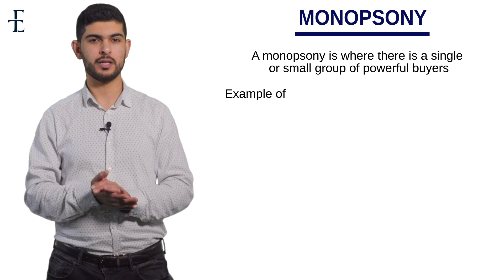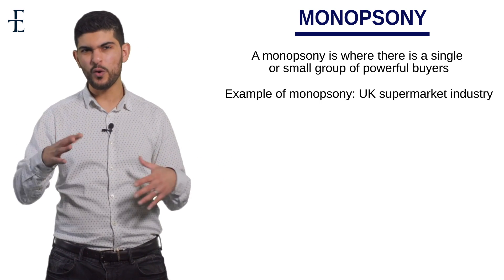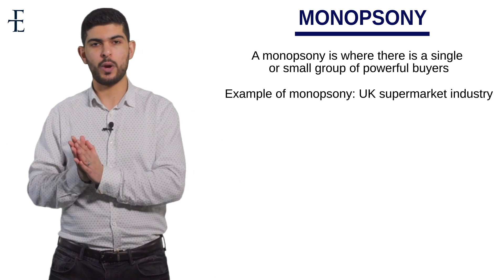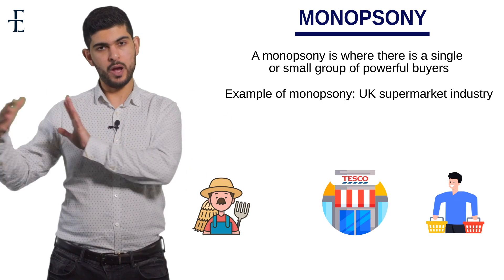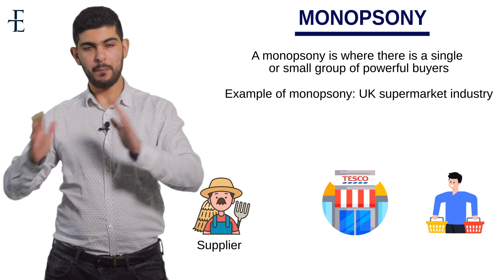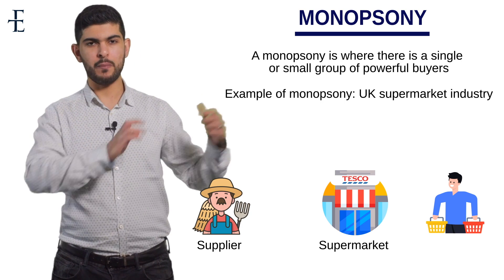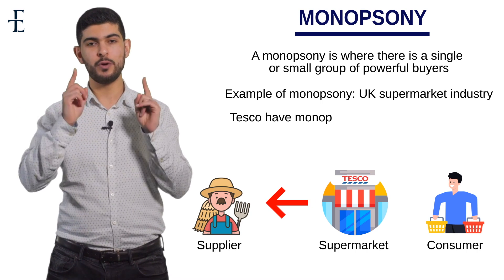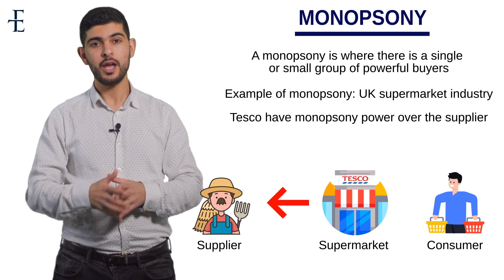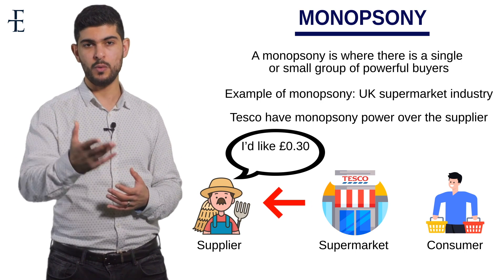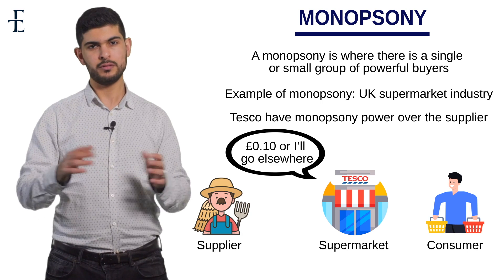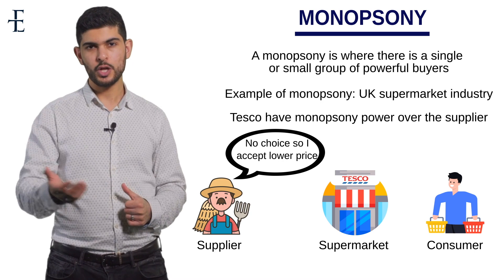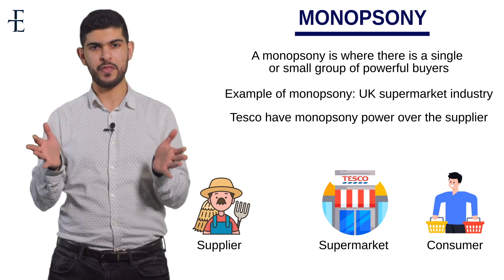A great example is the supermarkets — there are probably about four or five big ones: Tesco, Asda, Sainsbury's, M&S, etc. There are three players: player one is the farmer, the supplier; player two is the supermarket, Tesco; and player three is the consumer — you and I who buy produce from Tesco. Tesco have monopsony power over the suppliers, because if Tesco goes to a farm and says 'we want it at this price,' the farm can't really say no — there are hardly any other supermarkets to sell to. So Tesco has the power in that relationship.